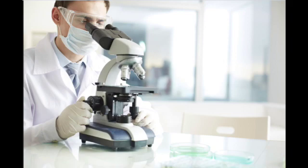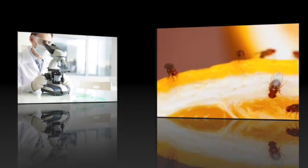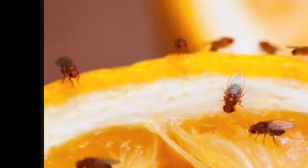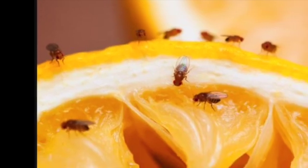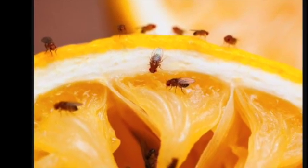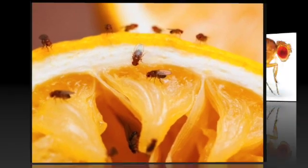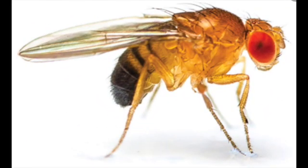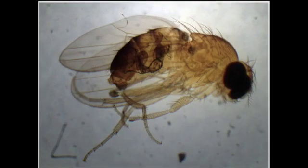Scientists also make things look larger — or magnify them — by using a light microscope. The object to be viewed is placed on a clear slide, and light passes through the object and two lenses. You look through the eyepiece and turn knobs to focus an image. The photograph is actually a really zoomed-in version of a fruit fly — here are some fruit flies on an orange, so you get an idea of how tiny they really are.